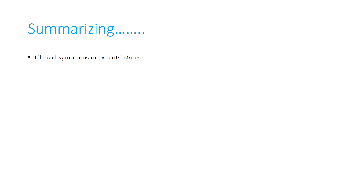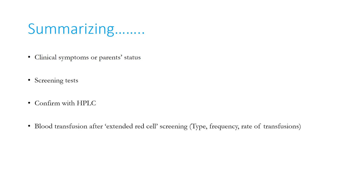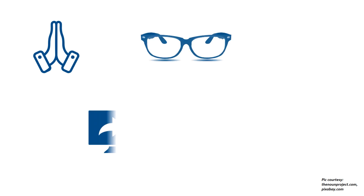To summarize: when a patient presents with clinical symptoms of thalassemia or a family history, we perform screening tests including CBC, peripheral blood smear, RBC indices, RBC count, RDW, and calculate Mentzer's index. We confirm diagnosis with HPLC or capillary zone electrophoresis, start blood transfusions after extended red cell genotyping, and monitor type of PRBC transfused, frequency, and rate. Iron chelation is initiated after 10–15 transfusions, serum ferritin more than 1000 micrograms per liter, and in a child older than 2 years. Thank you for watching.